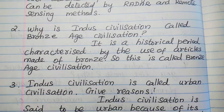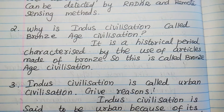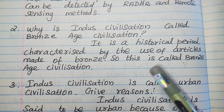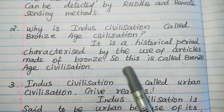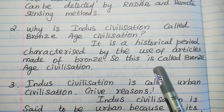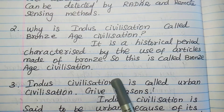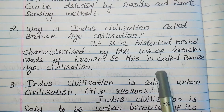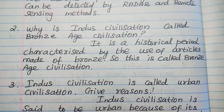Question 2: Why is Indus civilization called Bronze Age civilization? It is a historical period characterized by the use of articles made of bronze, so this is called Bronze Age civilization.